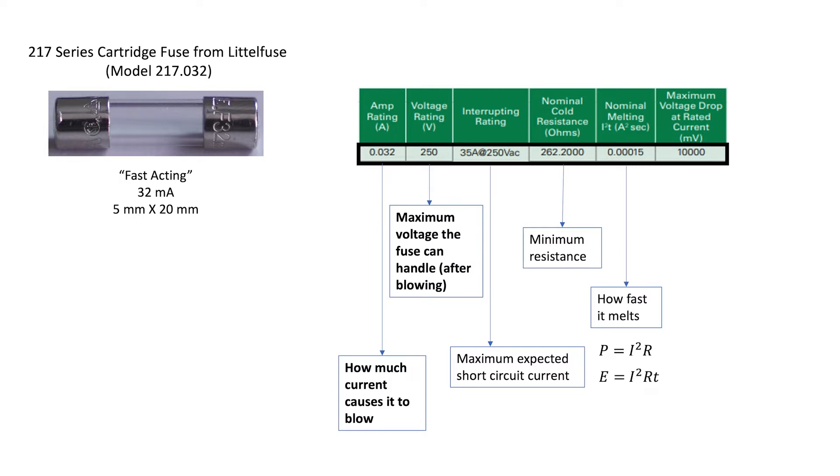The energy required to melt the fuse, E, is going to be power times time. E equals I squared R times T. In a fuse, since it's basically just a resistor, the R is constant. So the energy required to melt a fuse is proportional to I squared times T. That's what this number tells us.